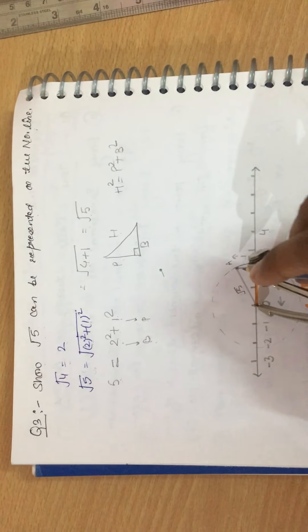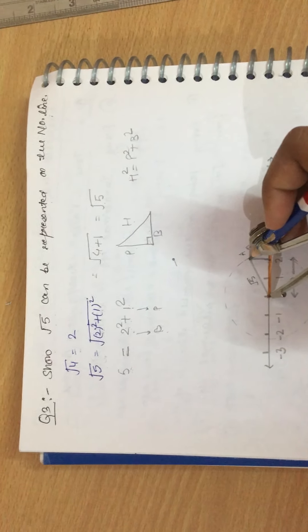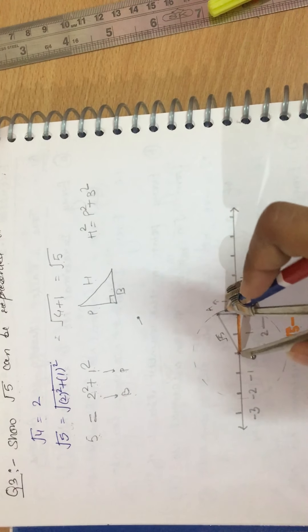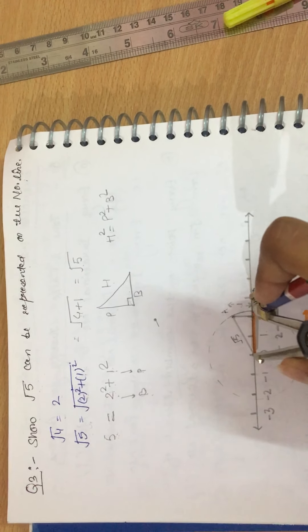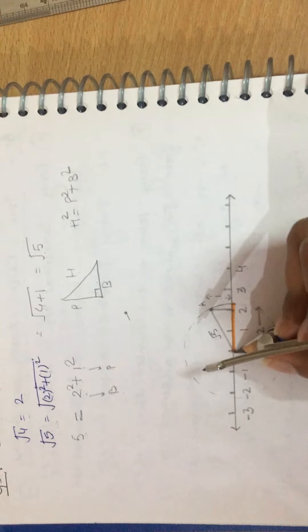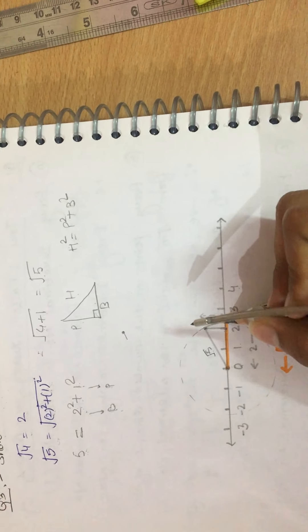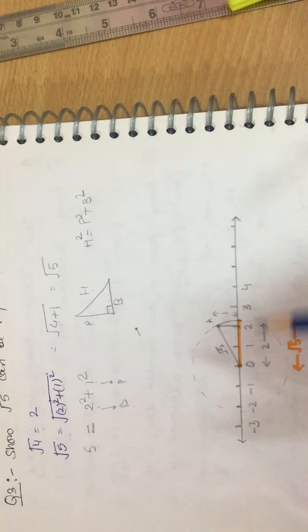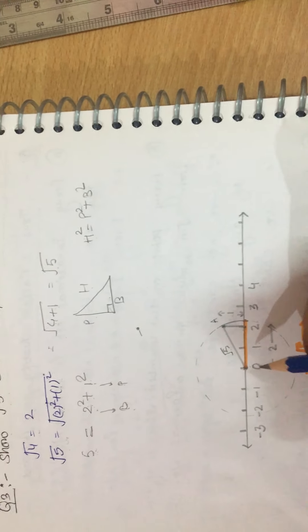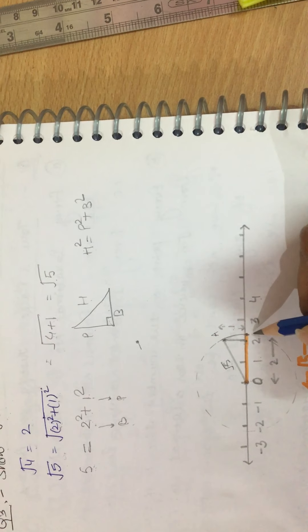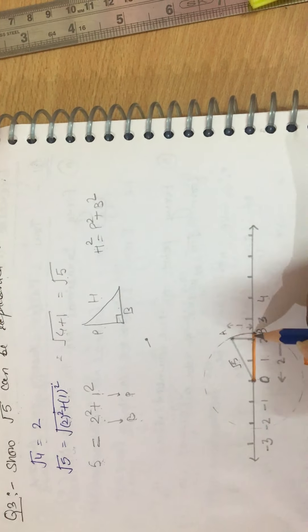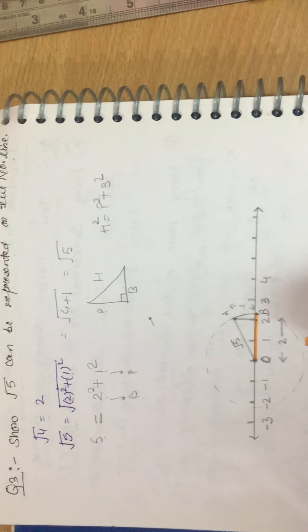But to represent under root five on the number line, what we will do is take a compass, fill this measurement, and draw a circle here. Now we will draw a dotted line from this point to the number line. Where the arc will cut the number line, that is the required point, which is under root five.